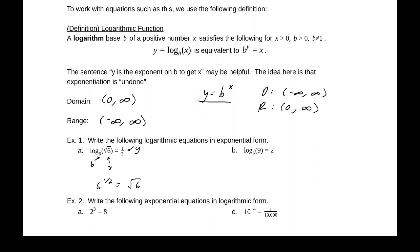Now all of these should be true equations once we're finished with them. 6 to the 1 half power equals the square root of 6. All right, there's our b, there's our x, there's our y. y is the exponent that goes on b, so 3 to the 2nd power, to get 9. 3 squared equals 9.